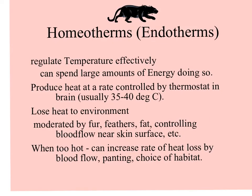Homeotherms or endotherms regulate their temperature effectively, but we spend a large amount of energy doing so. For most homeotherms, the rate of heat produced is controlled by an internal thermostat, and body temperatures are usually between 35 and 40 degrees centigrade. Homeotherms lose heat to the environment, but this heat loss is moderated by surface and subsurface fat, and also different patterns of blood flow. When homeotherms are too hot, heat loss can be increased by more rapid breathing and by moving to a cooler habitat.